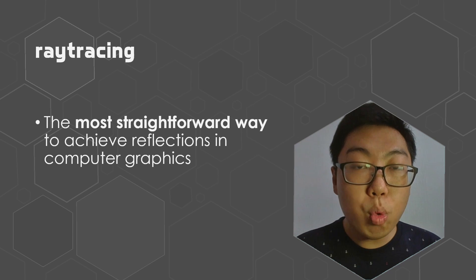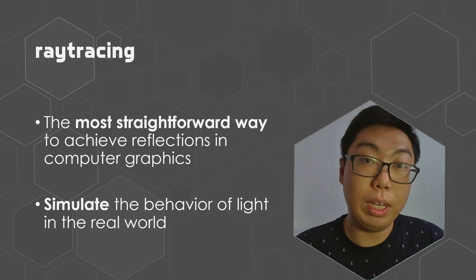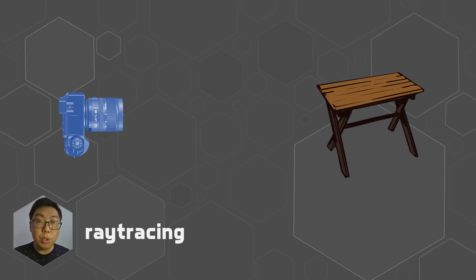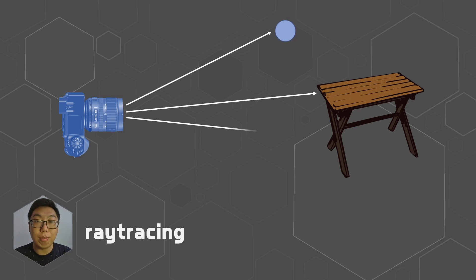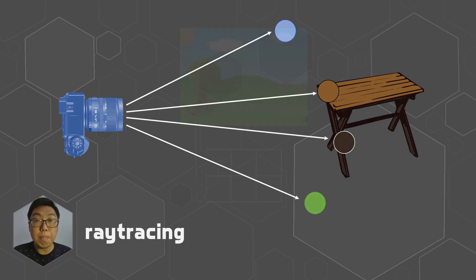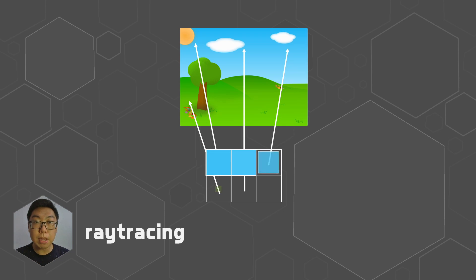Essentially, how ray tracing works is it attempts to emulate what light is actually doing in the real world. In the world of ray tracing, what we do is we trace the path of light rays. We essentially fire rays of light out from the camera that go into the 3D scene, and what they're trying to do is hit a surface and sample a color. You can imagine that if we were to do this once for every pixel in the image, then we have a rendered image.